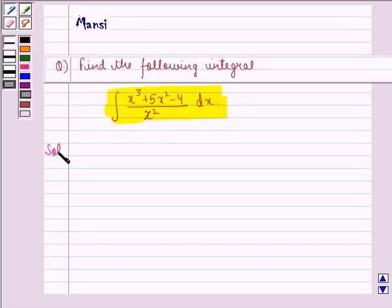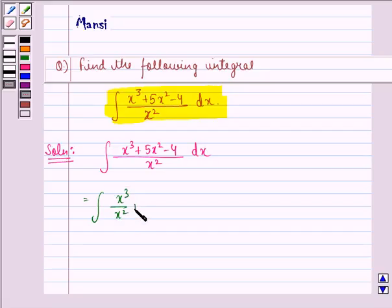So let us start with the solution to this question. We are given the integral of (x³ + 5x² - 4)/x² dx. This can be written as the integral of x³/x² + 5x²/x² - 4/x² dx, because we have taken x² in the denominator with each term in the numerator.